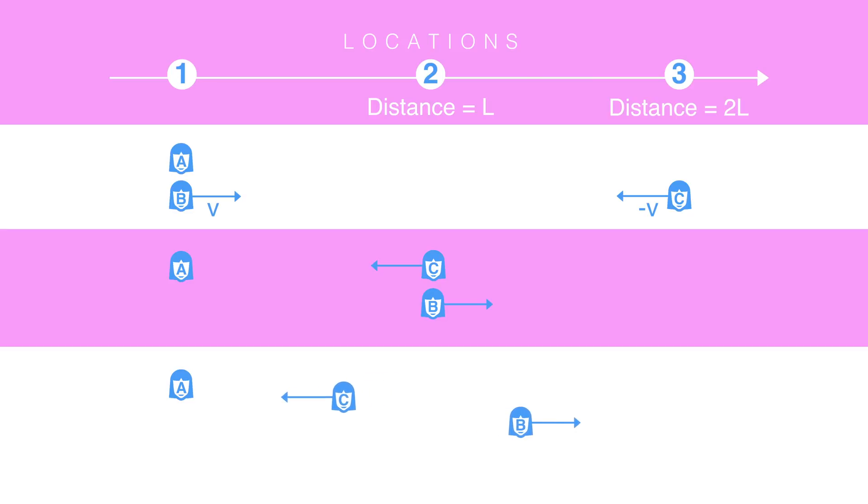Observer C then travels back to position one. As they pass location one, they hold up a big digital billboard that shows the reading on their clock as they pass location one, the reading on their clock as they pass location two, and the amount of time it took observer B to get to location two. You can then work out the amount of time it took observer C to get from location two to one and add it to the amount of time that observer B took to get from one to two. And then you can figure out how long it took to travel from location one to two and back to one again without any acceleration.